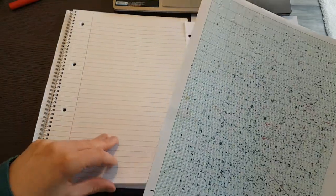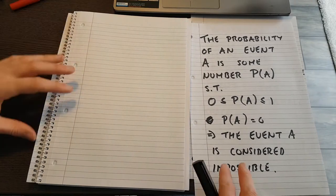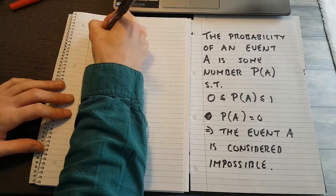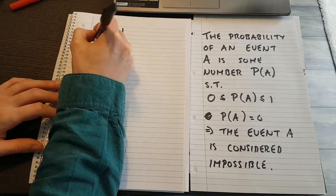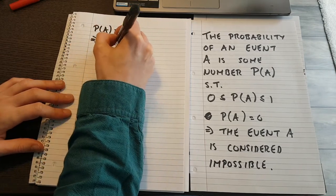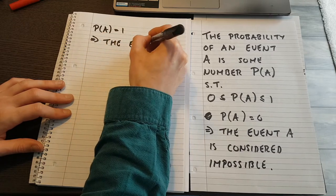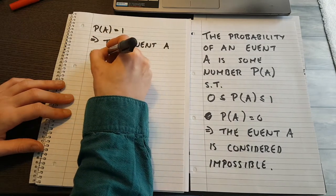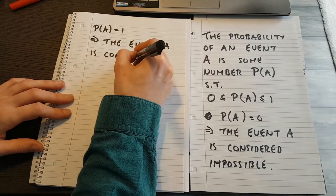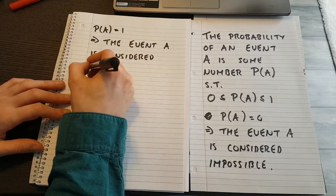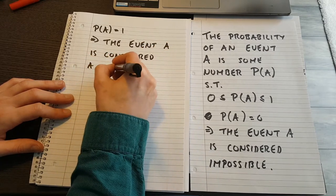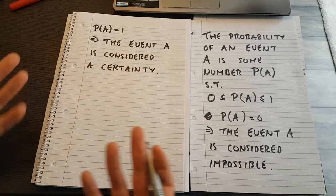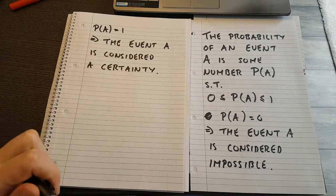What does the probability of 1 indicate? Well, if the probability of A is equal to 1, that would indicate that the event A is considered a certainty, which would mean that it would be impossible for A not to happen.